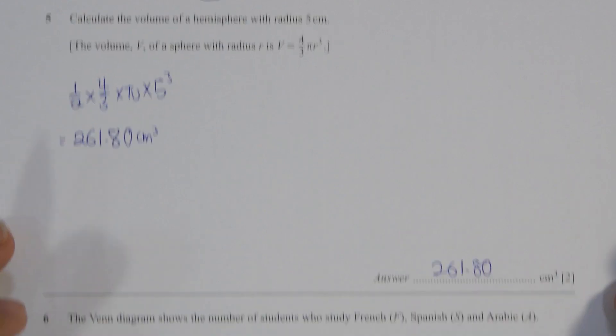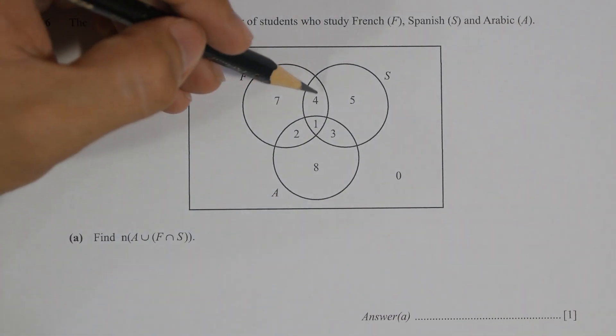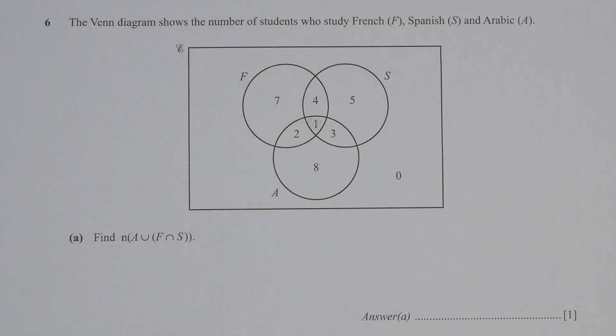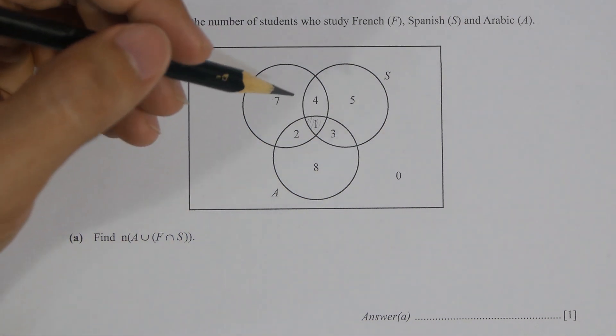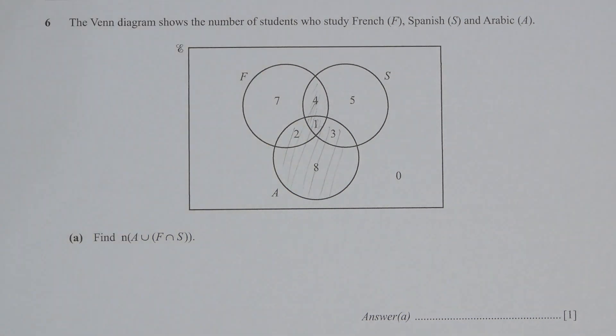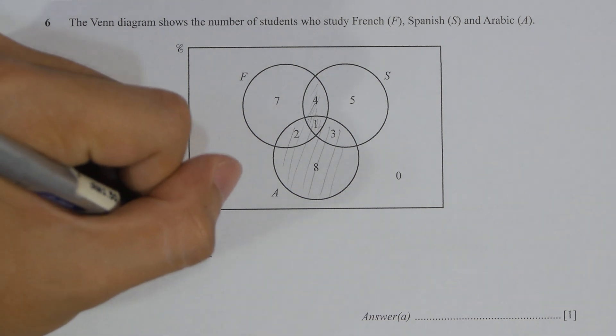Question A for number 6, find A union with F intersect with S. So the entire A will be 2, 1, 3, 8, and then you are required to plus the 4. So the results will be 18.